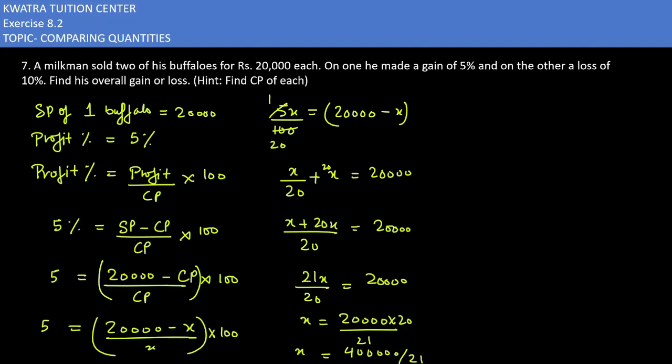Now do the same calculation for the second buffalo. It's a loss, so use the loss formula. Selling price is 20,000. Loss percent is 10%. So loss percent equals loss over CP times 100.